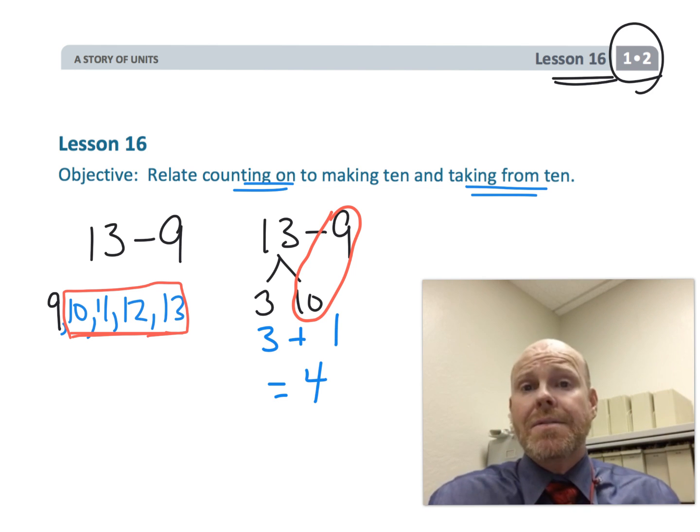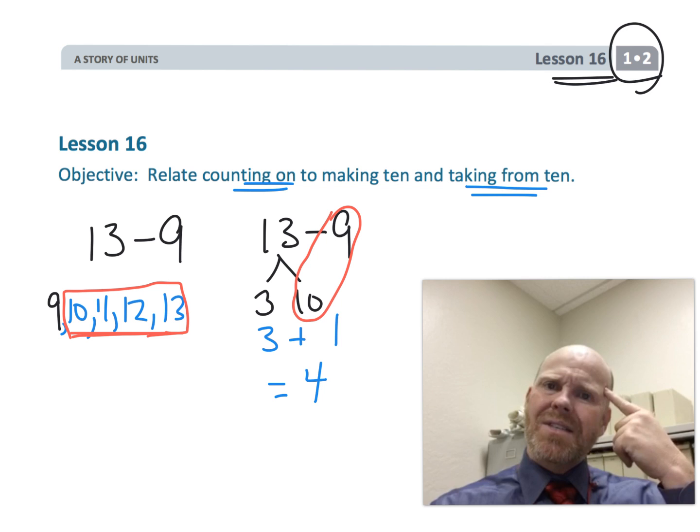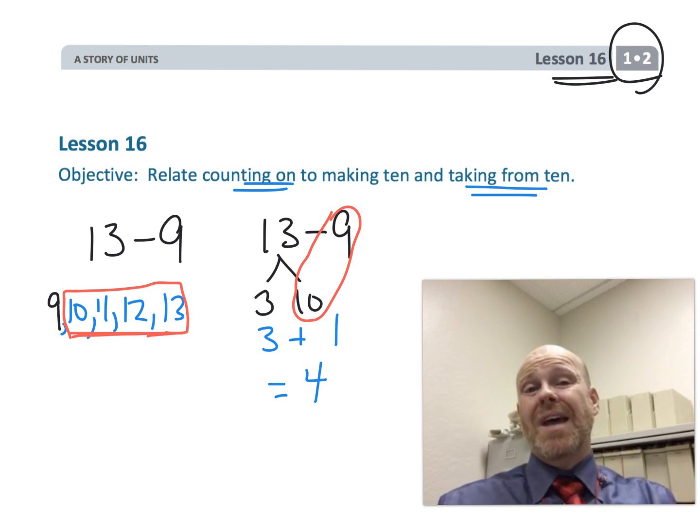In both cases you get 4 as your answer, but in this lesson we're gonna give students choice which method they want to use. We're also gonna ask students to think metacognitively: which method do they like better? At this point it doesn't really matter what they say, as long as we start getting them into the idea that they have a choice.